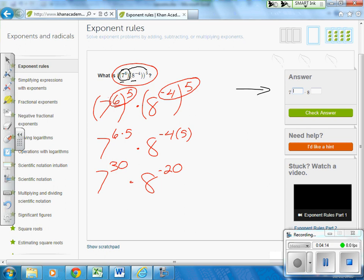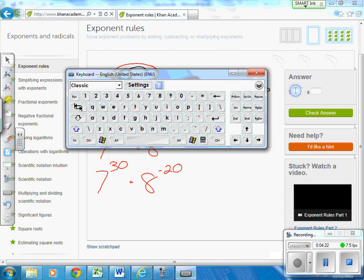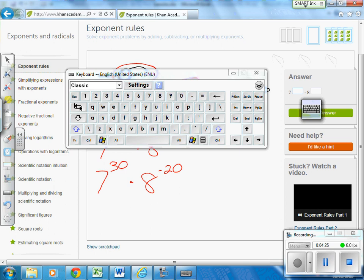So our answer over there is going to be, for the 7, it is going to be to the 30th because we multiply exponents. And for number 8, it's going to be to the negative 20.